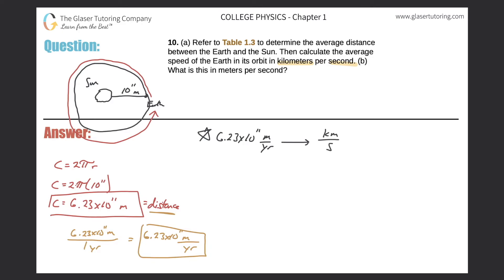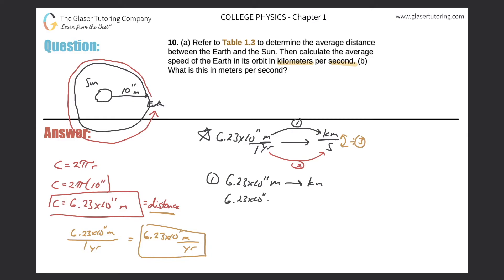Three-step process. Step one: convert the meters to kilometers. So 6.23 times 10 raised to the 11 meters — put meters on the bottom, kilometers on the top. The relationship is one kilometer for every 1000 meters, so the meters cancel. Dividing by 1000, this works out to be 6.23 times 10 raised to the 8 kilometers.